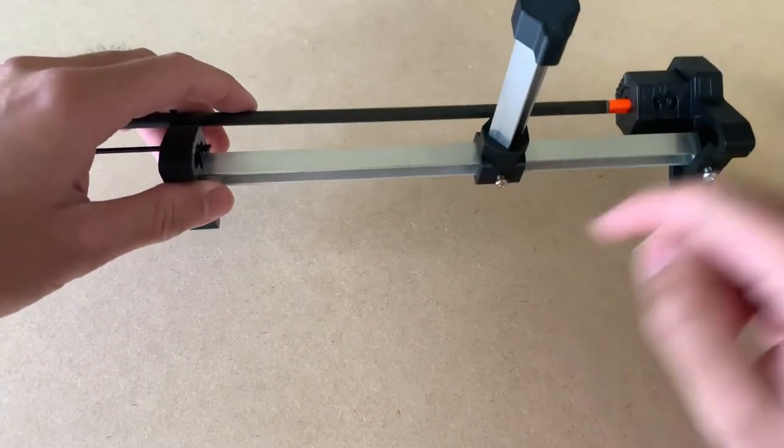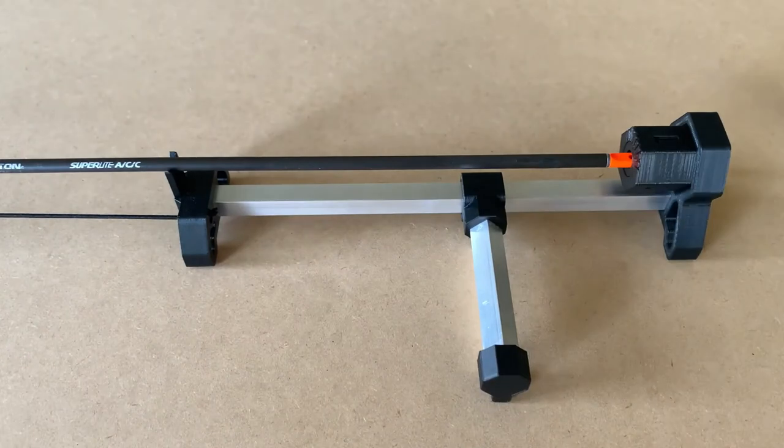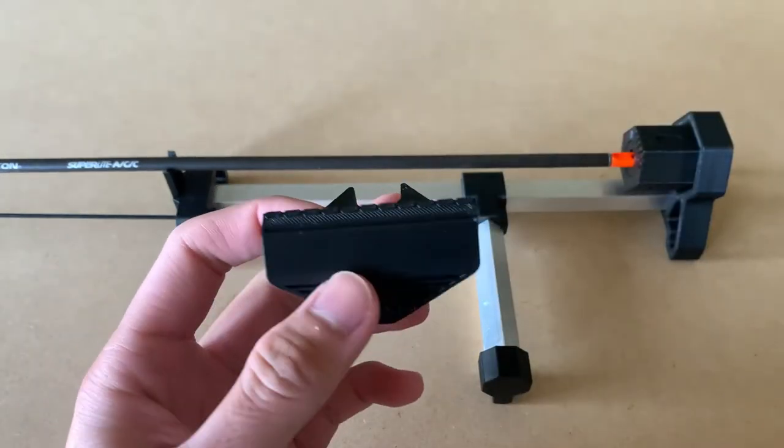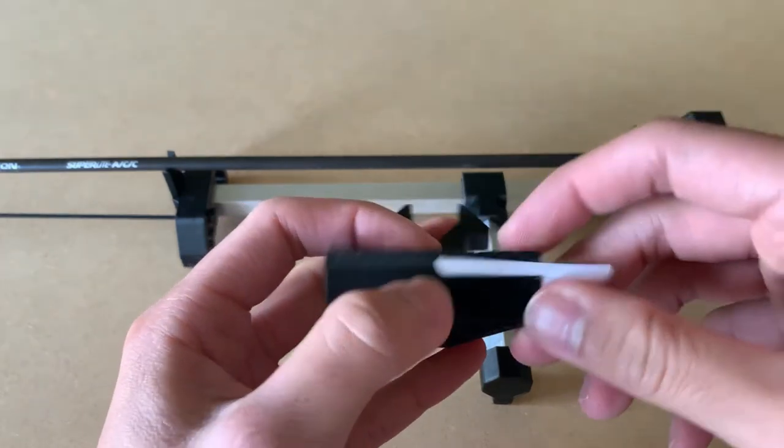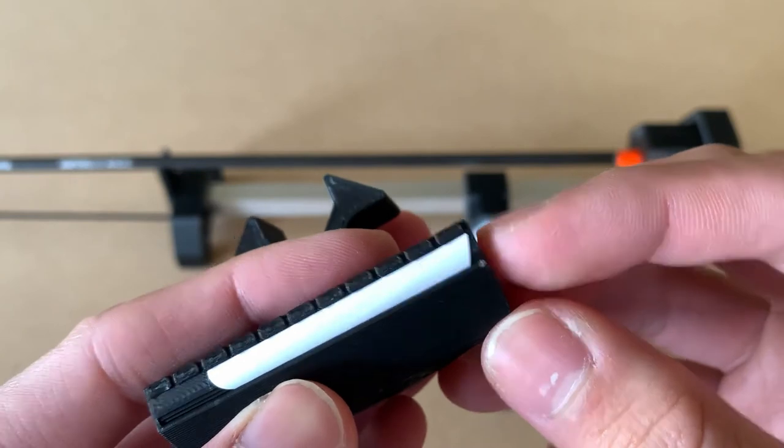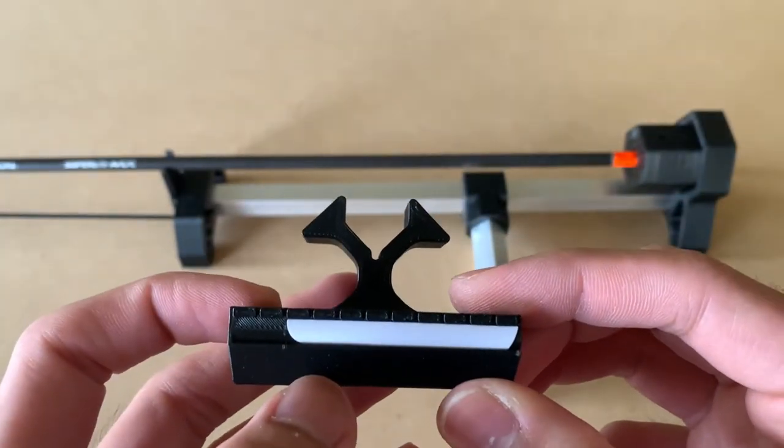From here we can grab the clamp and load in a fletch, aligning it with the first bump like so and making sure it's touching all the other bumps along it.